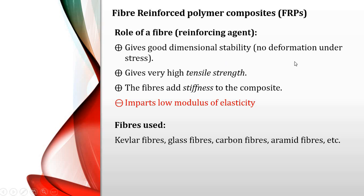Reinforcing fibers provide good dimensional stability to composites — there will be no deformation under stress, and their shape and size will be retained. They also provide high tensile strength, greater than steel, and add stiffness to the composite. The negative property added by fibers is low modulus of elasticity, meaning the elasticity of the material decreases.